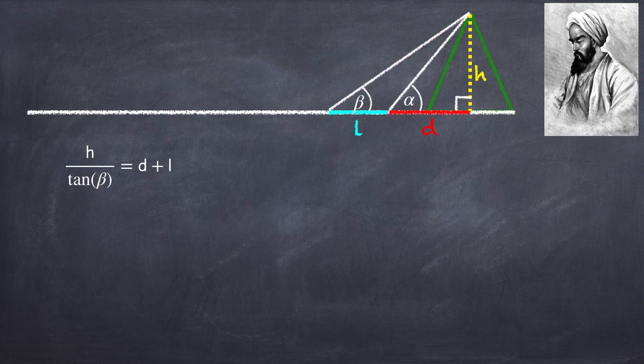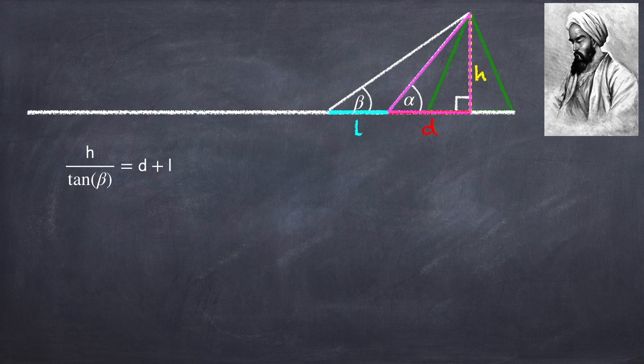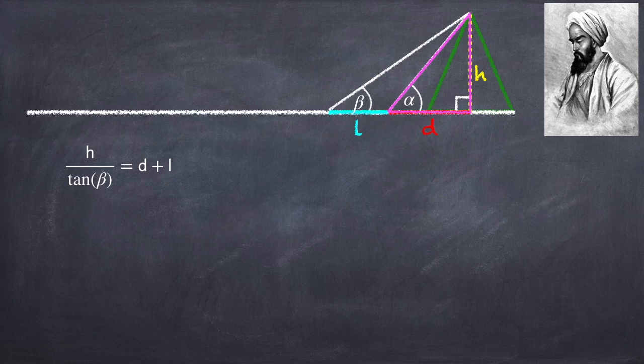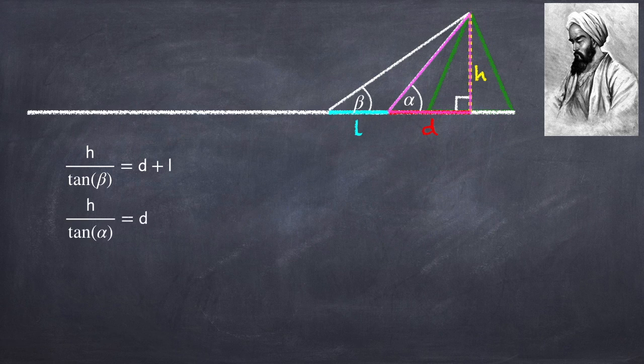Now we do the same thing for this smaller triangle that uses angle alpha. And we have that the tangent is h over d, which again I'm going to rewrite as h over tan alpha equals d.